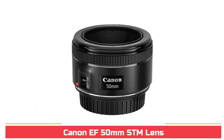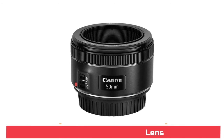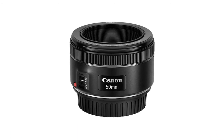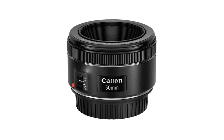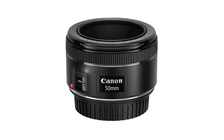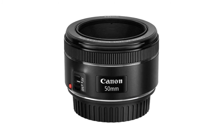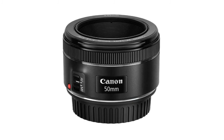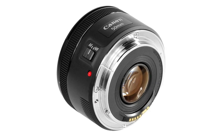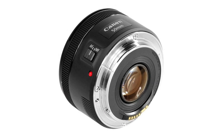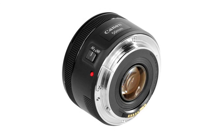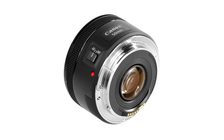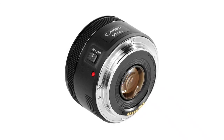Canon EF 50mm STM lens. 50mm focal length, maximum aperture of f1.8, great for portraits, action, and nighttime photography. Minimum focusing distance of 1.15 feet, 0.35 meters, and a maximum magnification of 0.21x. Stepping motor (STM) delivers near-silent continuous autofocus for movies and smooth AF for stills. 80mm effective focal length on APS-C cameras, 50mm on full-frame cameras. Lens construction: 6 elements in 5 groups.